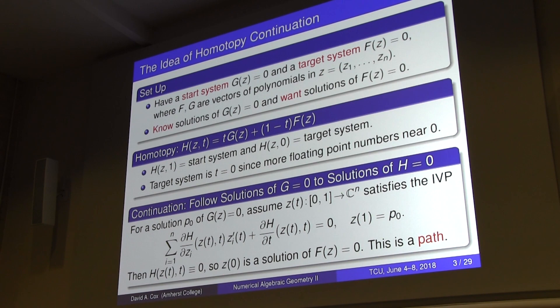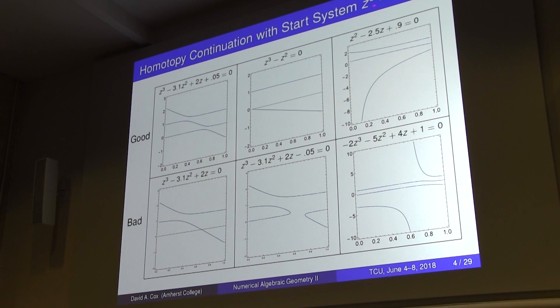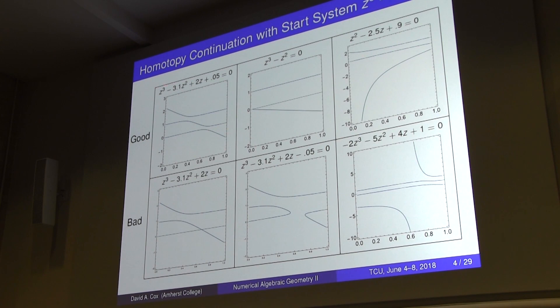Let me give some examples. Here's my start system, with roots zero, plus one, and minus one. I tried various different target systems and things can happen — sometimes good, sometimes bad. A good thing is that every solution of the start system has a path leading to a solution of the target cubic polynomial. Another good thing is that two solutions might land at the same point, corresponding to a double zero — so the method also tells you the multiplicity.